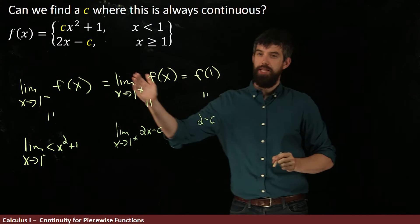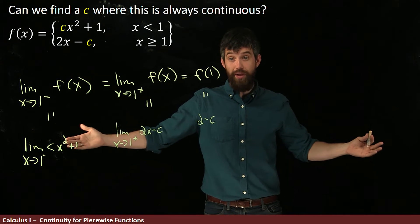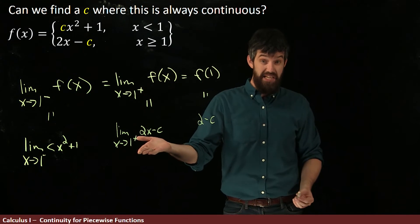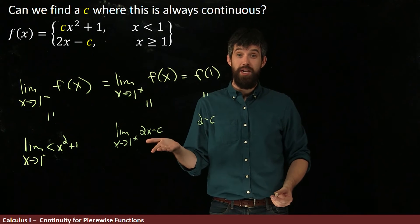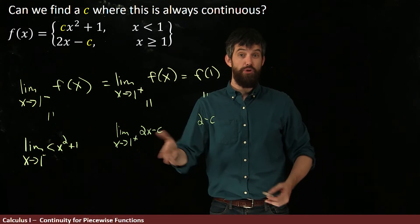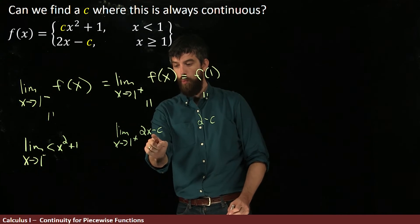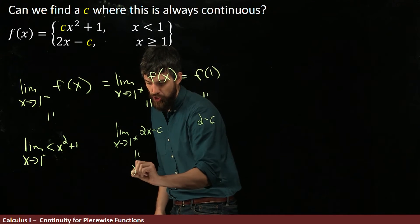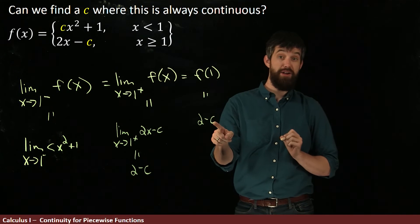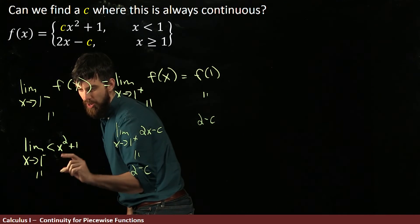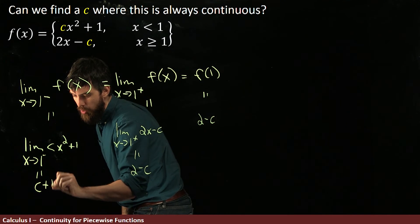So these are the three different things that I need to be equal. Okay, well how do I do these limits? Both of these limits over here are easy in the sense that these are polynomials, so they're continuous. So to compute a limit, I just plug it in. So in this case, if I plug in 1 for the value of x, this is equal to 2 minus c. Same value as the function value as we would have expected. And then over here, I'm going to plug in 1 and I'm going to get c plus 1.